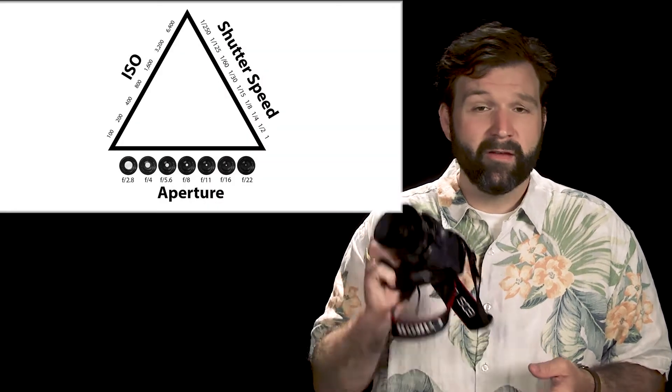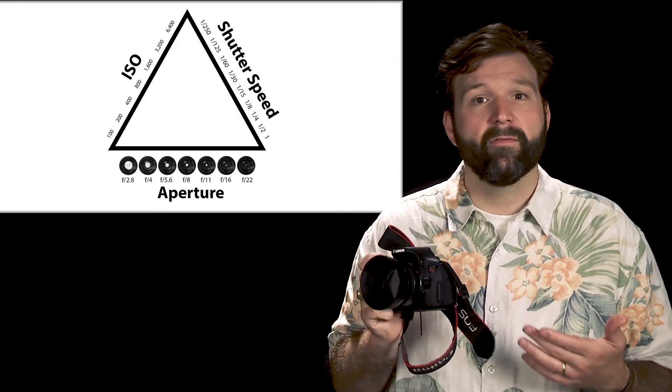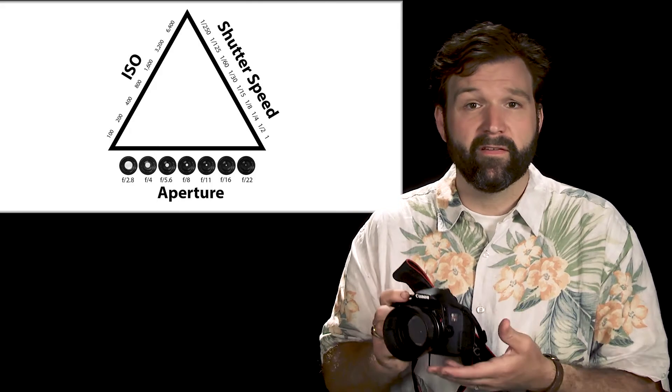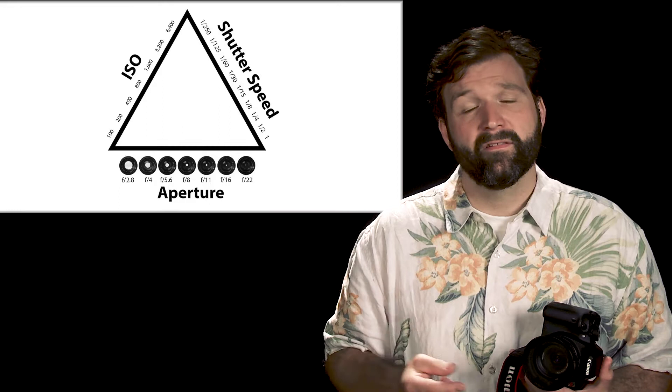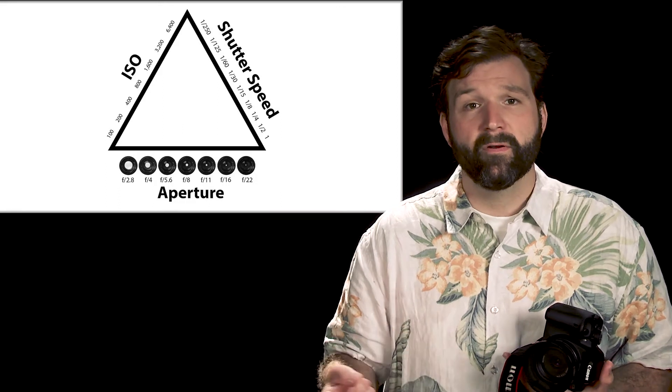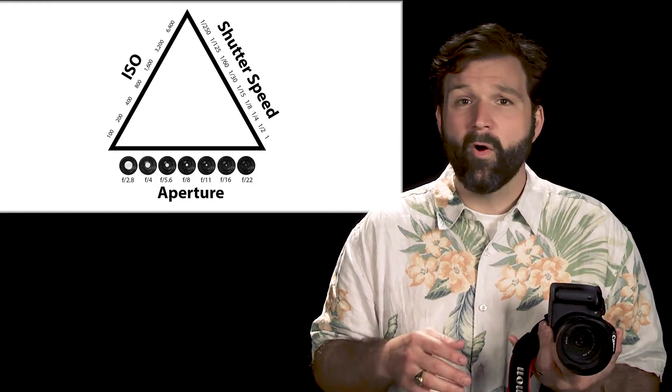Hi, today you're going to learn about the power of photography through something called the Photo Triangle. This camera right here can be a real powerhouse if you simply take it off automatic, and then you have the power in your hands. So let's talk about the Photo Triangle. There are three things that make it work: f-stop, shutter speed, and ISO. These three things can do all kinds of things, but we need to understand how to use them.